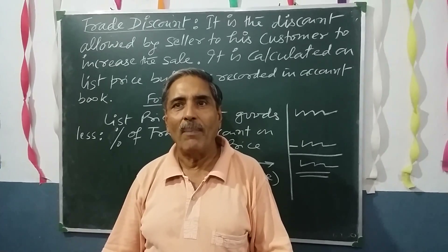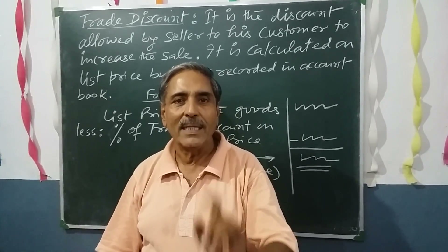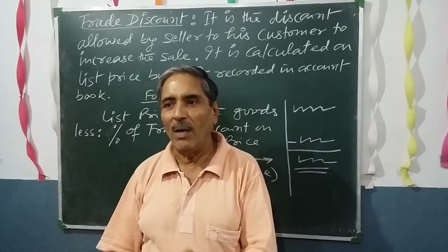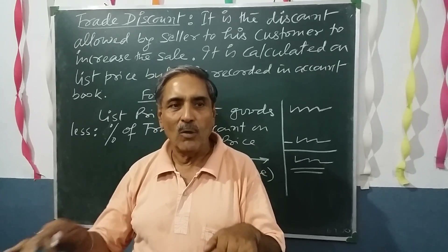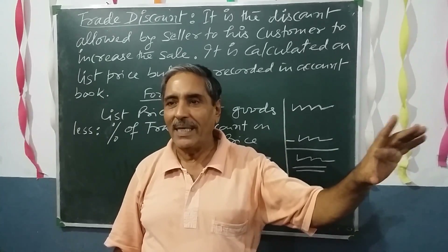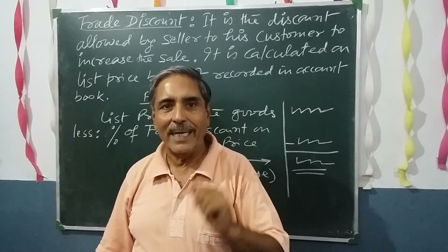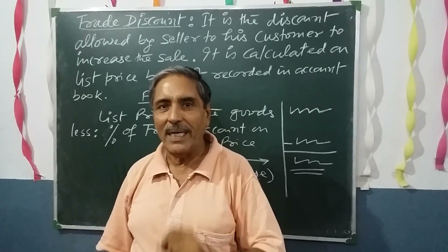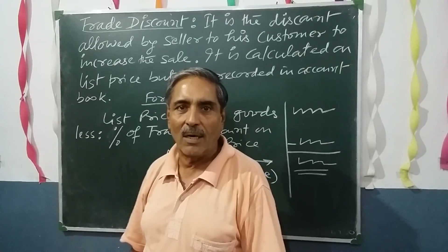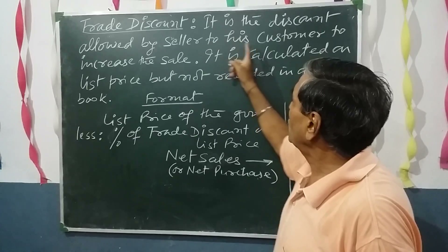You decide to buy ₹10,000 worth of goods and since there is a 10% discount, you have to pay only ₹9,000. Suppose you had originally estimated buying goods of ₹8,000, but after seeing the offer, you purchase ₹10,000 worth of goods, paying only ₹9,000. By paying ₹1,000 extra, you are getting ₹2,000 worth of extra goods. This is what trade discount is — it is the discount allowed by the seller to his customer to increase sales.